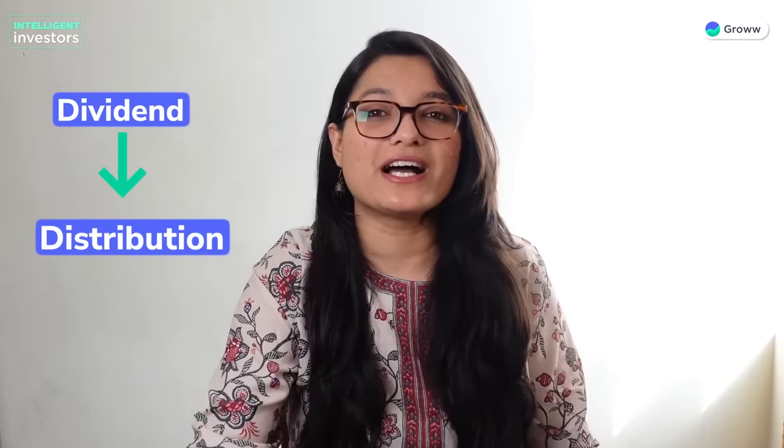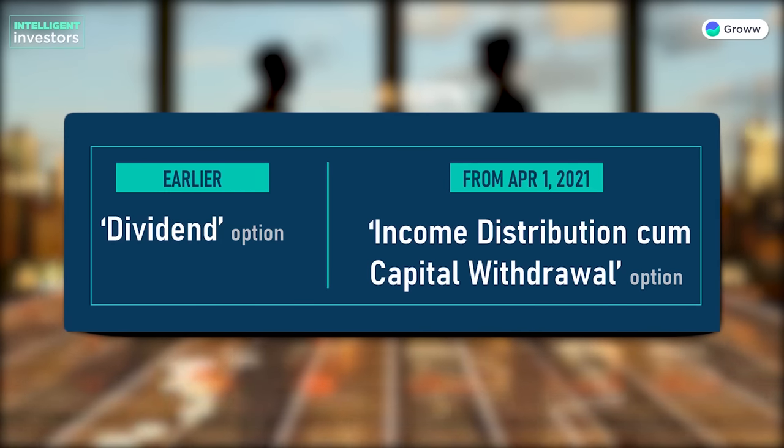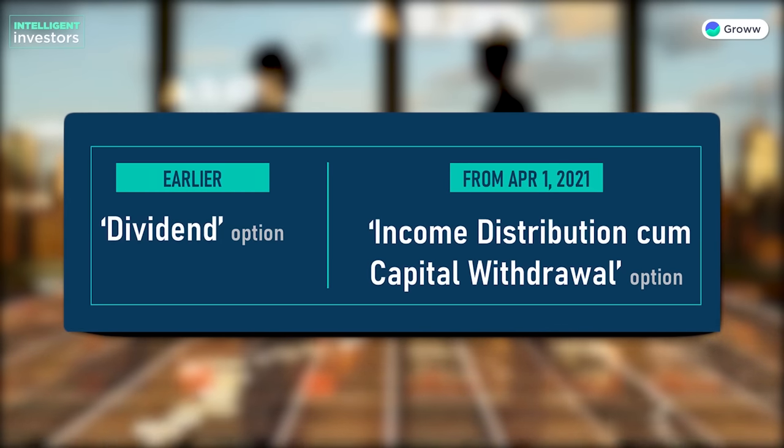Let's discuss some really important things. According to SEBI regulations, the dividend nomenclature was changed from April 2021. Now there is no such thing as a 'dividend' in mutual funds. What was called a dividend is simply called a distribution, and what was called the dividend plan is now called the Income Distribution cum Capital Withdrawal plan, or IDCW plan. SEBI changed this because many mutual fund investors misunderstood dividends, thinking they were a bonus over and above the returns their mutual fund scheme delivers. This was very misleading.